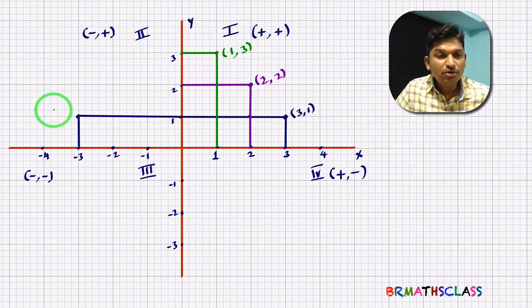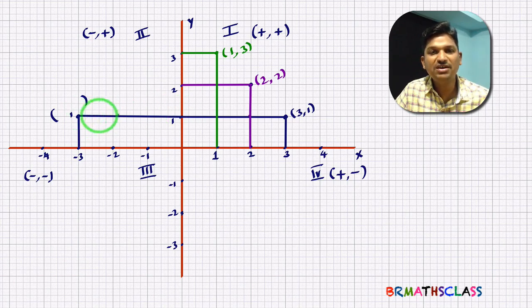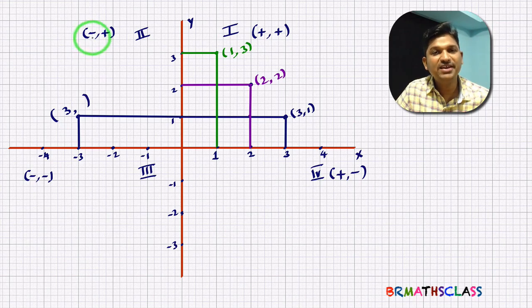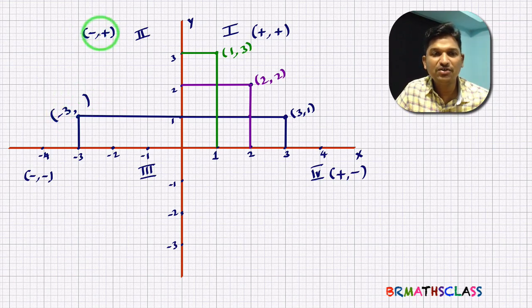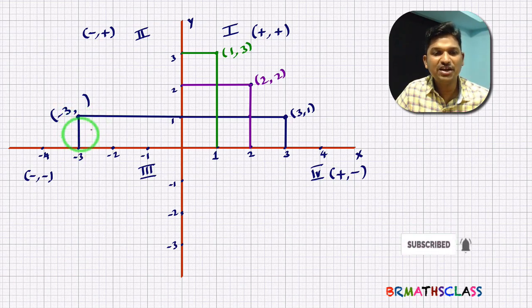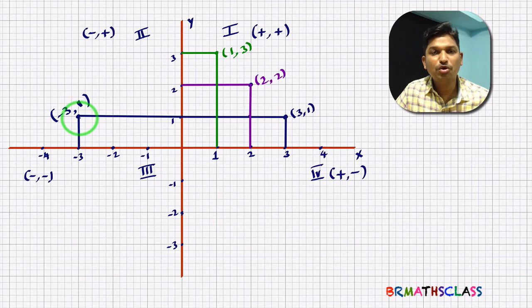Observe this point. The x-coordinate — perpendicular distance from the point to the y-axis — is 3 units. But as this point is in the second quadrant, the x-coordinate is negative, so we write minus 3. The y-coordinate is positive: perpendicular distance from the point to the x-axis is 1 unit. So this point is (−3, 1). Compare with (3, 1): the distances from the axes are the same, but they lie in different quadrants.